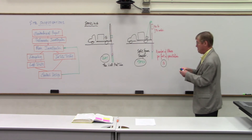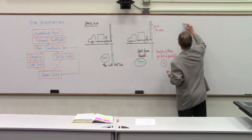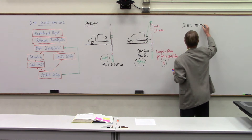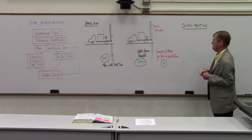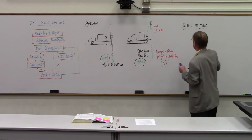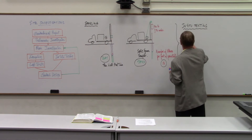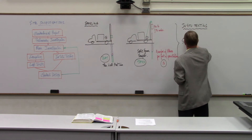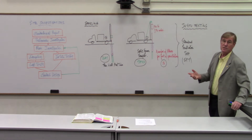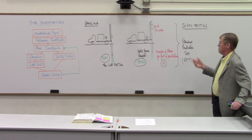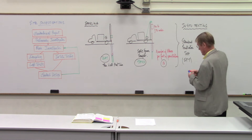Now I need to talk about in-situ testing. The SPT — Standard Penetration Test — is the first in-situ test I've described. It was developed around 1910 in the US and is an in-situ test used to test sands. Another test we can use is the Cone Penetrometer Test, or CPT, developed around 1935 in the Netherlands.